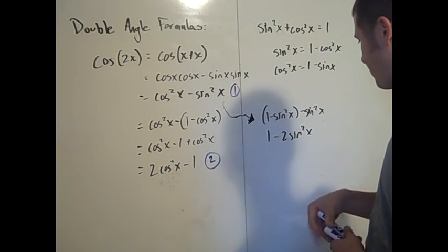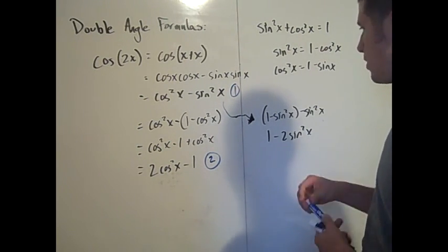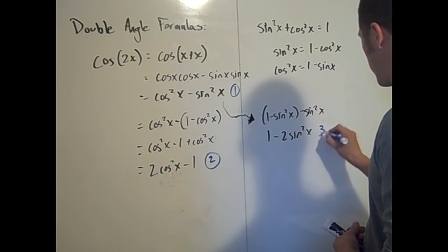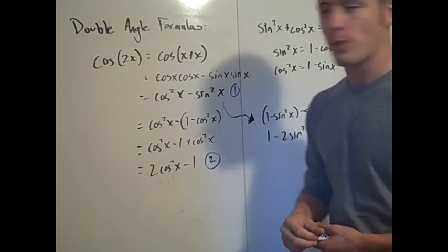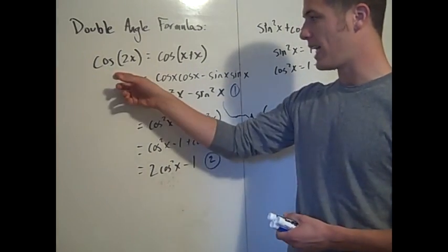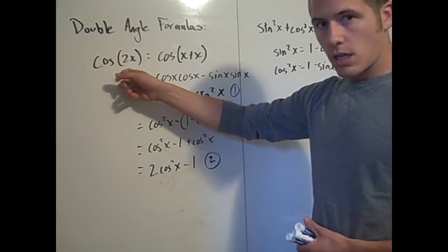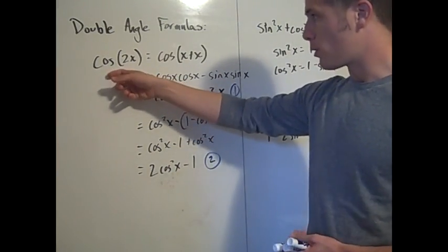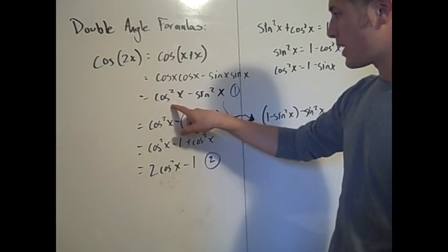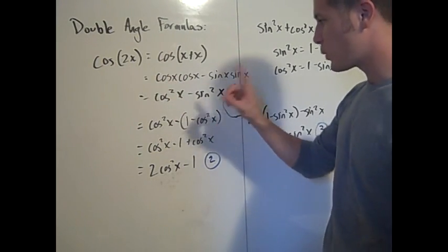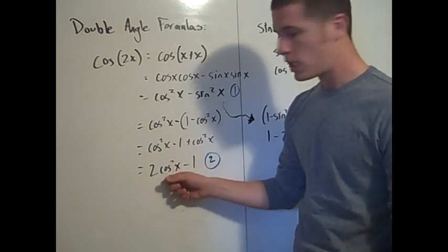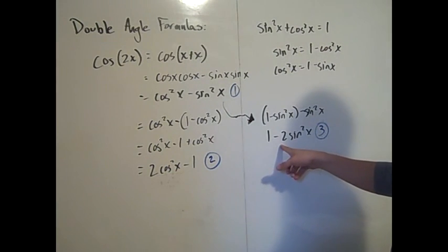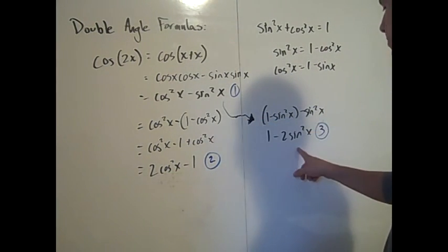This gives us 1 minus 2 sine squared x, and that's the third form you want to know. So the three double angle formulas for cosine 2x are: cosine squared x minus sine squared x, or 2 cosine squared x minus 1, or 1 minus 2 sine squared x. You're going to want to know all three of those.